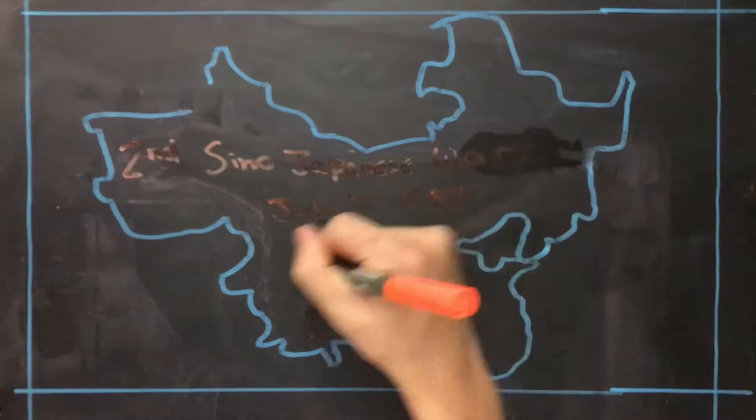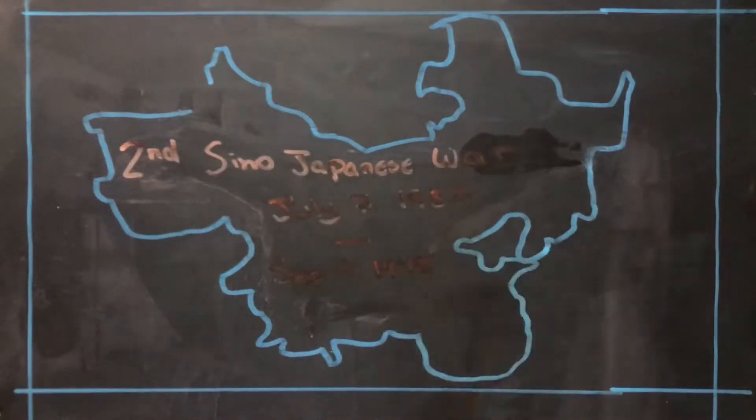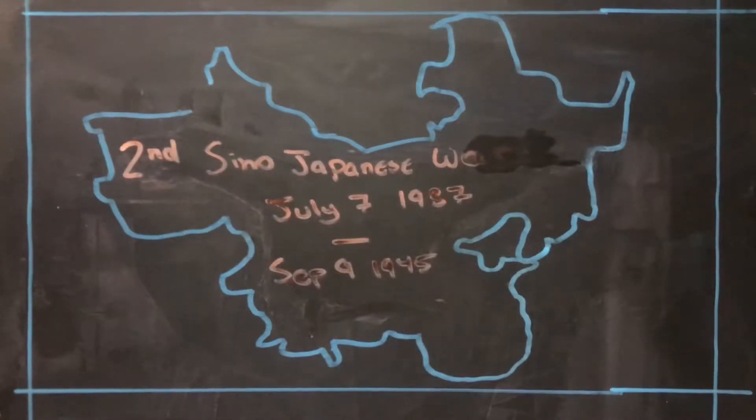World War II casualties added up to around 65 million. Despite the surprisingly large number of casualties, the Second Sino-Japanese War is still largely disregarded by the world.